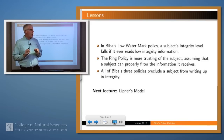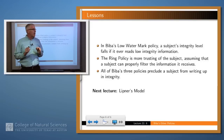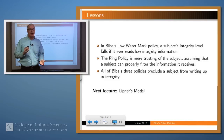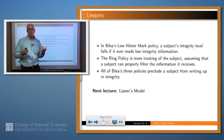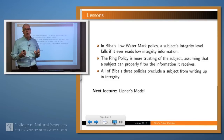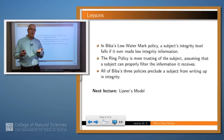Biba's low watermark policy is such that a subject's level will fall if they accidentally or deliberately read a low-integrity object. In the ring policy, it's a much more generous assumption — I can read anything, and it assumes the subject is able to filter out bad information. All three of Biba's policies preclude a subject from ever writing up an integrity, so a malicious subject can't corrupt higher-level information.